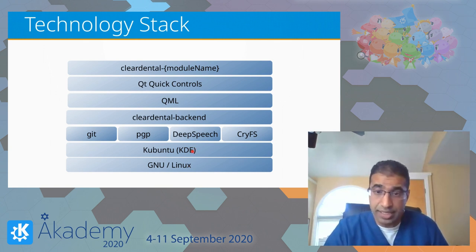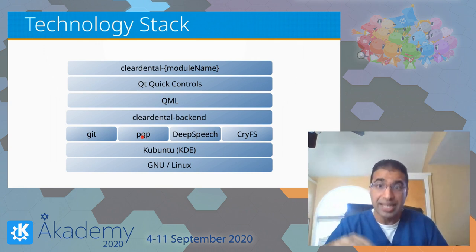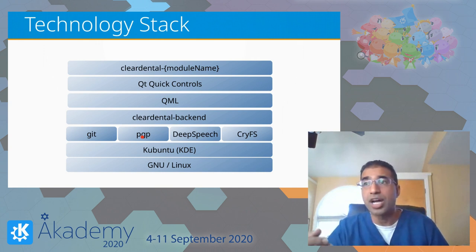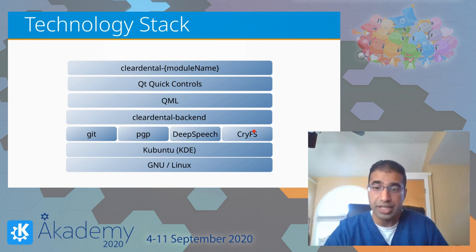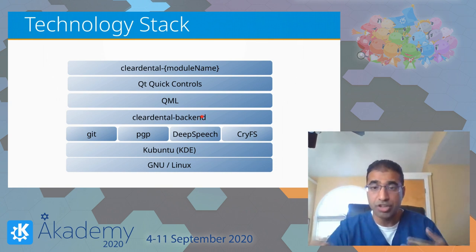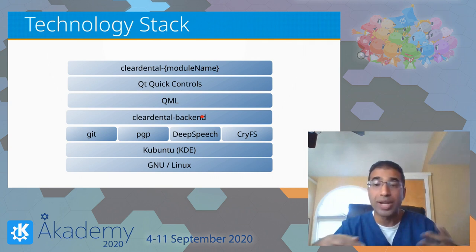Quickly covering the technology stack: my main target is Linux — I'm using Kubuntu for most of my testing. I'm using Git and PGP to make something very similar to a blockchain — not really a blockchain, but it has a lot of the same ideas. I'm using DeepSpeech for voice activation, trying to use as much existing open source as possible. CryFS is mostly for encryption so all actual patient data will be stored using CryFS. I made a module called Clear Dental Backend which has all the C++ code, and I'm using QML and Qt Quick Controls to access whatever I need from the backend to create the interface, with each module having its own UI.